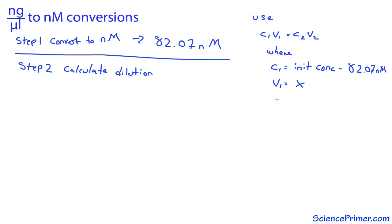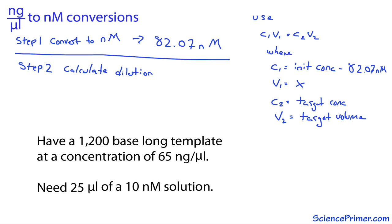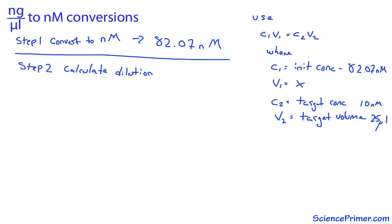C1 is the initial concentration of 82.07 nanomolar, V1 is the unknown sample volume needed, I will call that X, C2 is the target concentration, and V2 is the target volume. These last two were given in the problem. Target concentration is 10 nanomolar, target volume is 25 microliters. Solving the equation for the unknown gives V1 equals C2 V2 divided by C1.